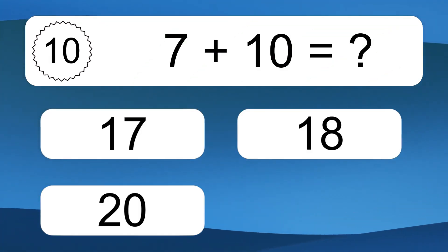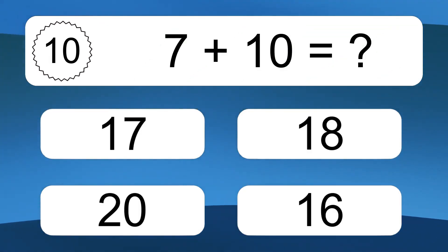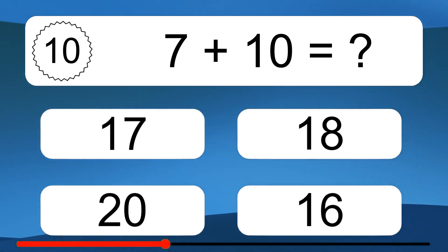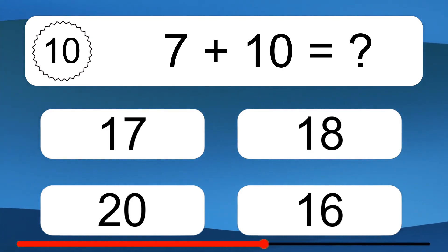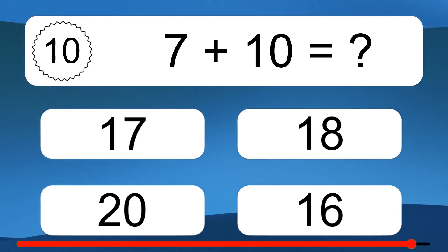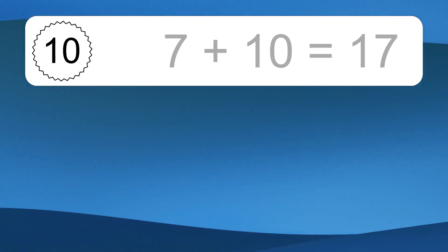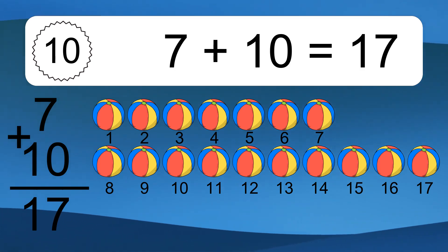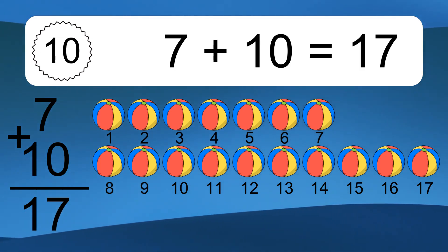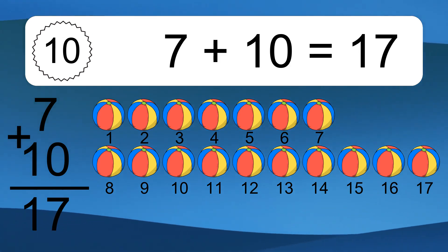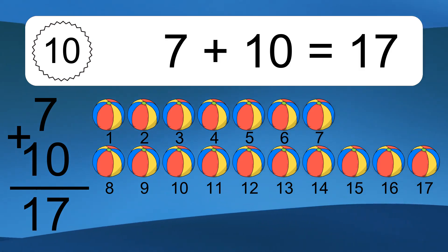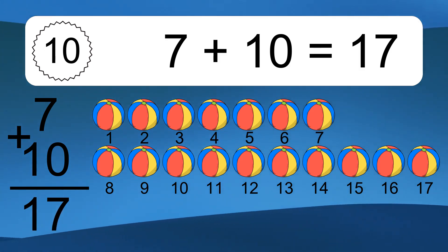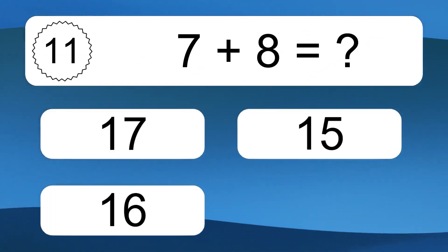7 plus 10 equals what? 7 plus 10 equals 17. Let's count it. 1, 2, 3, 4, 5, 6, 7, 8, 9, 10, 11, 12, 13, 14, 15, 16, 17. 7 plus 8 equals what?